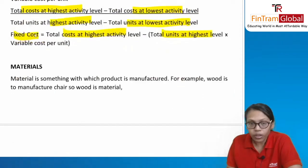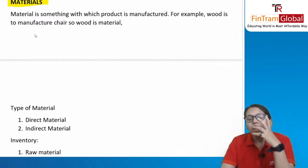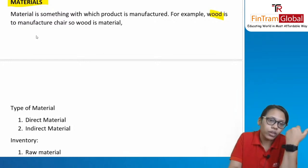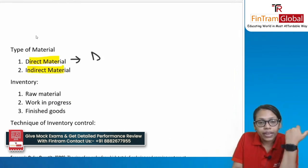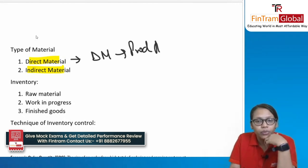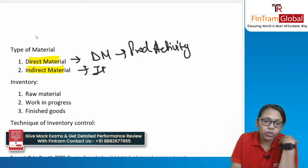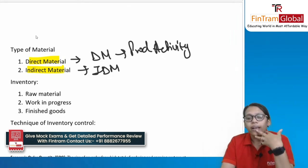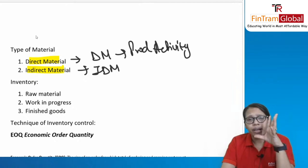Regarding material: material is of two types — direct and indirect. Direct material is used in the production activity, like the cloth used to manufacture a t-shirt. Indirect material is not used directly in production; examples include material for maintenance of ACs on the premises, or cleaning material for the premises.